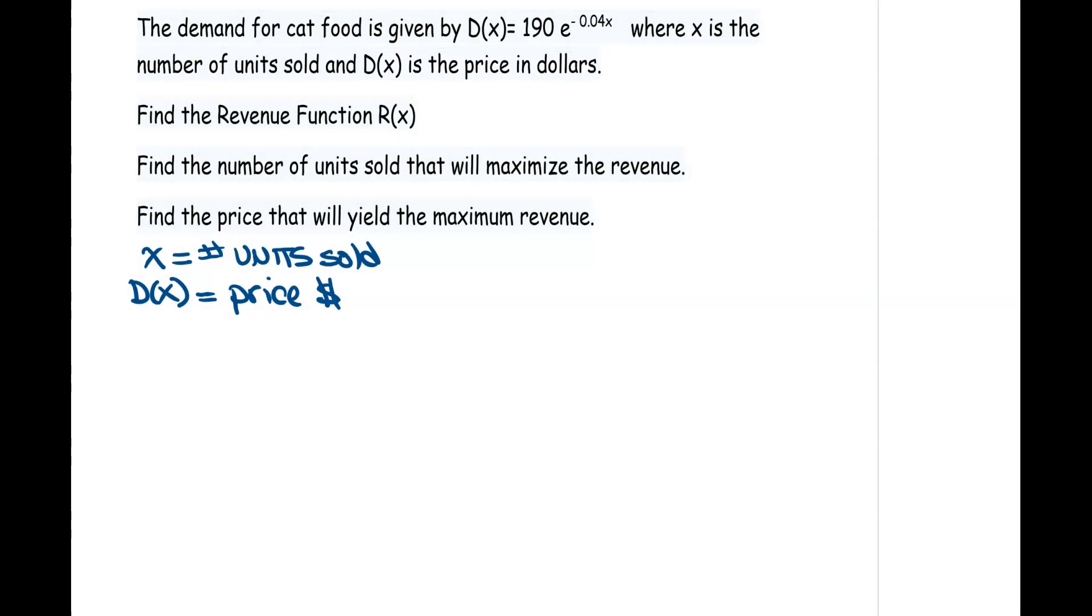It starts by asking you to find the revenue function. We know revenue is always our quantity, which is given by x, multiplied by our price. So our revenue function is going to be x, which is our units, multiplied by the price, which is that 190e^(-0.04x). So this is going to be our revenue function.